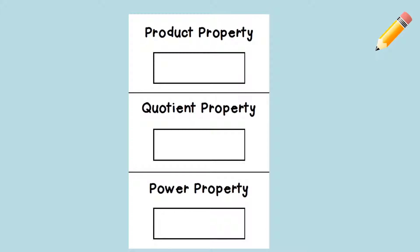You probably have a foldable from me. If not, you should get one when you come back to class. This is what the foldable looks like. There are three major properties we're going to talk about: the product property, the quotient property, and the power property.